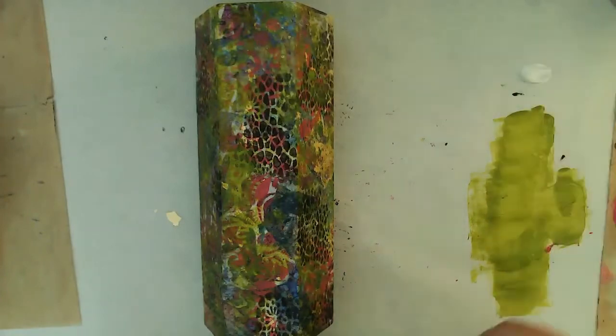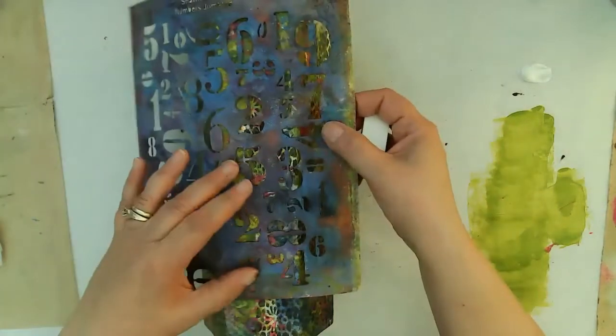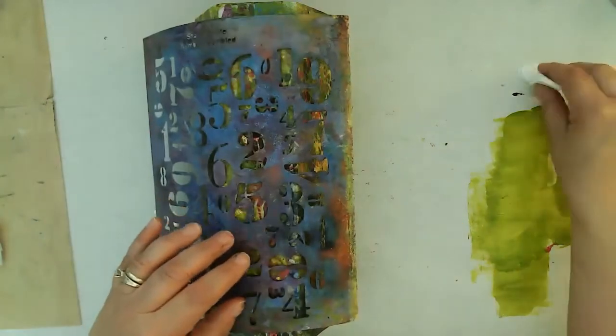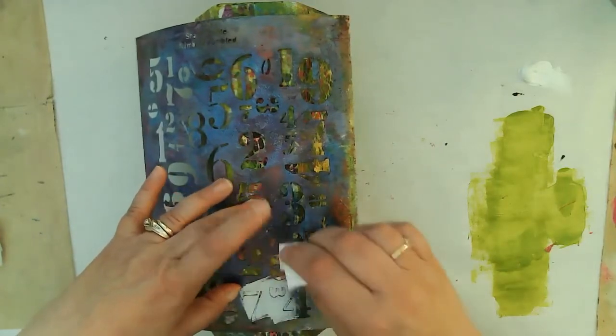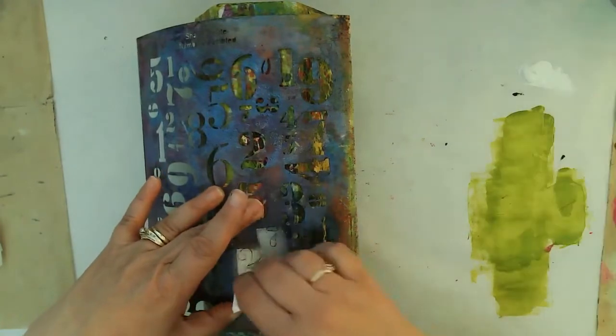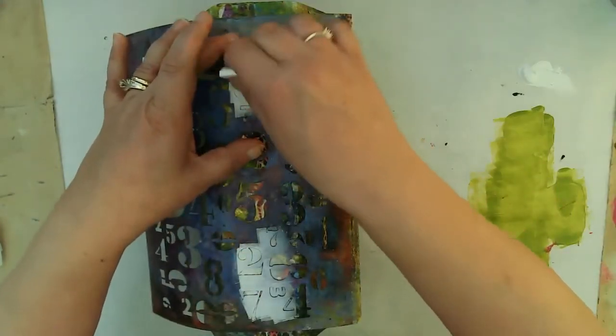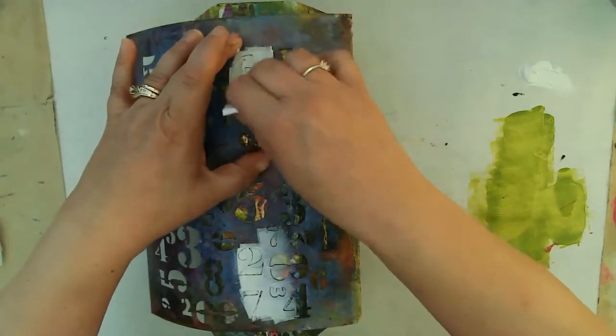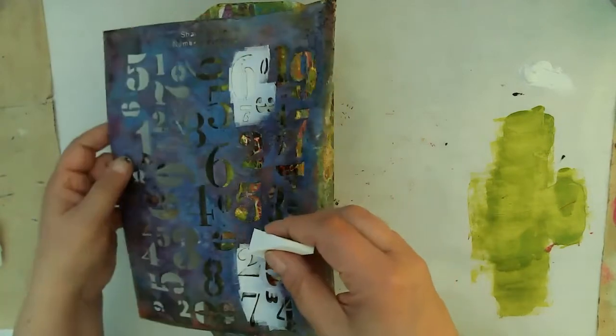And now I'm going to come in with my heavy body titanium white paint from Liquitex. I'm going to use the numbers jumble stencil and just put some numbers here and there. I think they're a fun addition to a piece and it definitely needed the white to lighten it up a little bit. So I was happy with it.